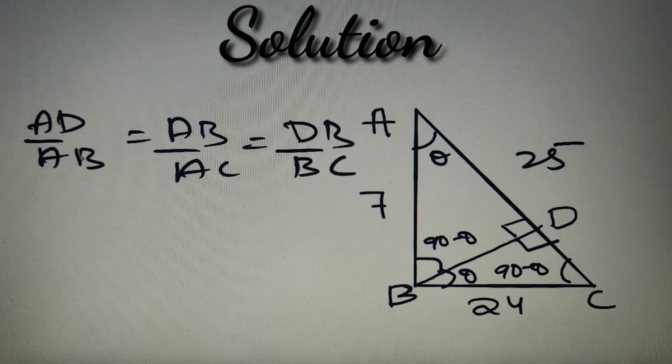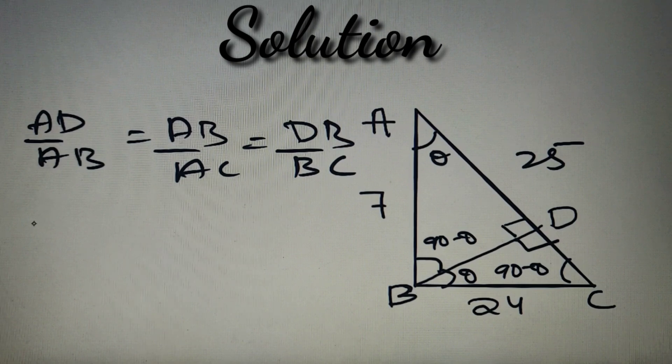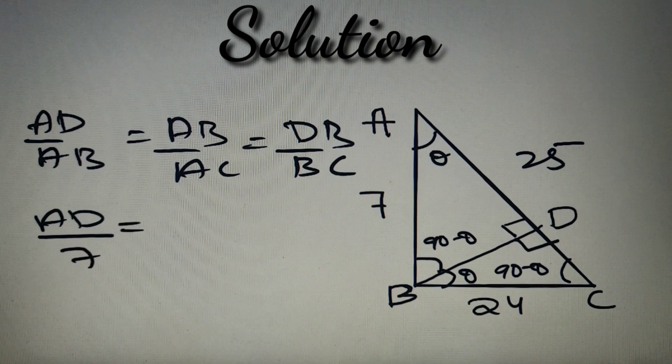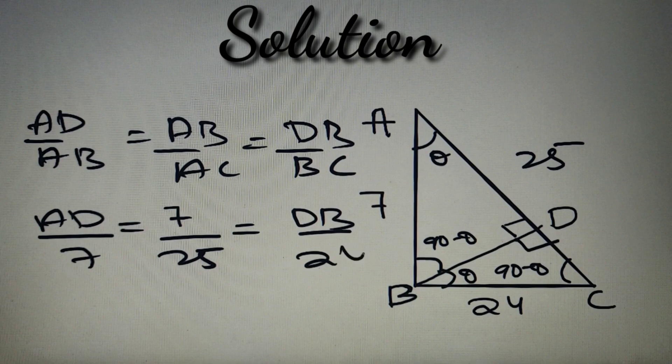We have got AD as AD itself. AB is equal to 7. AB again is equal to 7. The length of side AC is equal to 25. We have to find the length of DB, and the length of side BC is equal to 24.